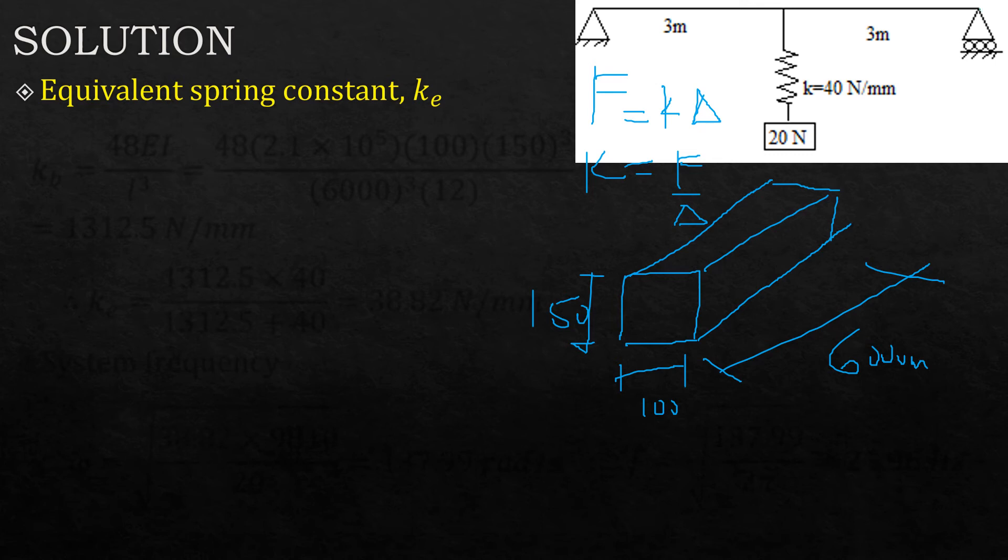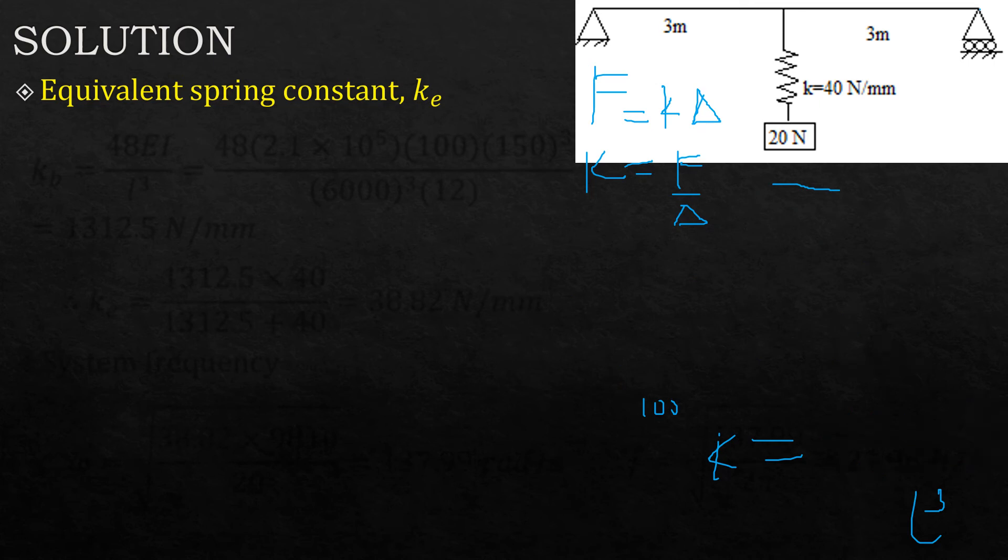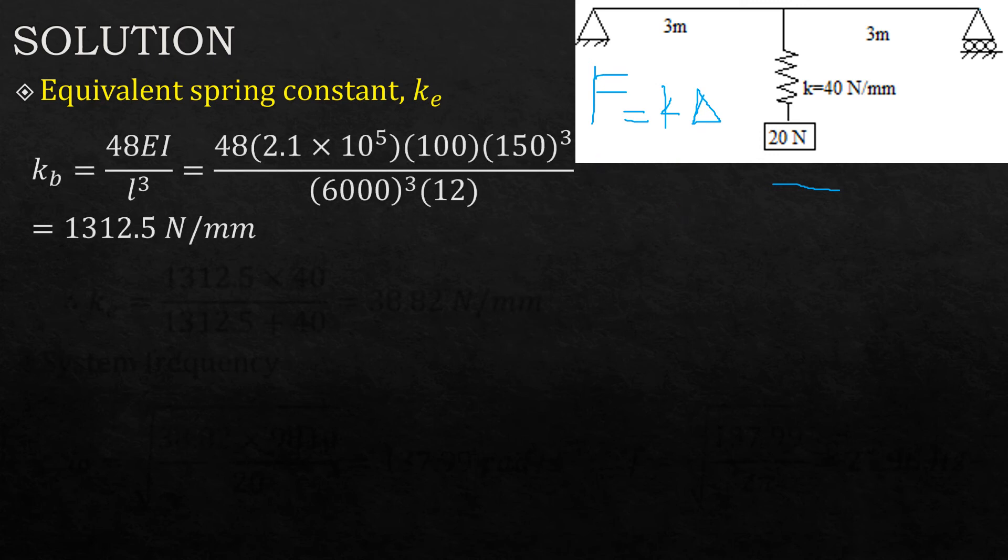What you need to obtain now here is I, the second moment of area for the beam, because it is not given. E, the modulus, is given. So I in this case is bd^3/12. b is 100, d is 150, over 12. With that you are good to go. You can resolve your problem quite easily once you understand what is required of you.